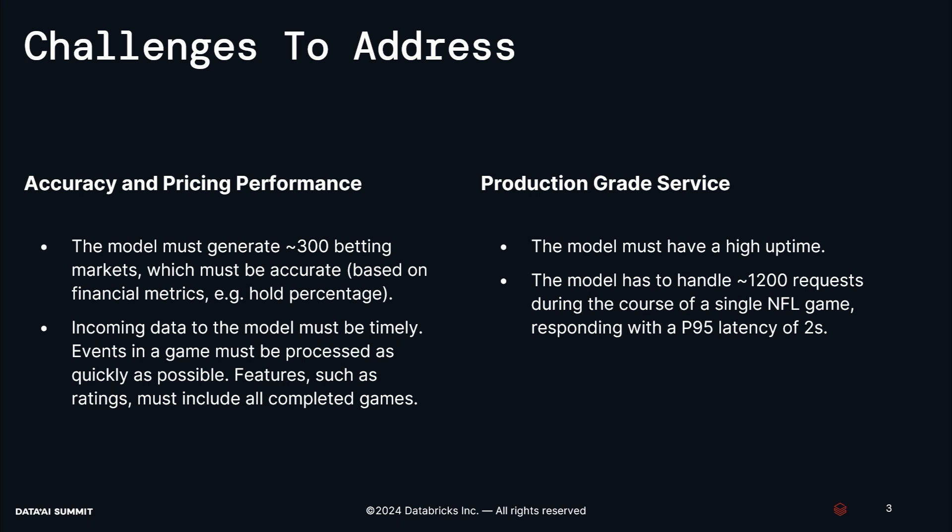Another branch of considerations is about building production grade services — reliability and stability. For DraftKings we're really concerned with our model having a high uptime. If the model is down during a sporting event, customers have a horrible experience, they can't use the product, and they'll easily be turned away from our offering. In terms of exact load and latency, our model has to handle around 1,200 requests and each request has to have a P95 latency of about two seconds. So this is a real-time machine learning system — two seconds is a fairly generous time budget, but you still have to do quite a lot in that time.